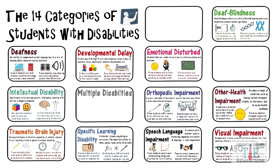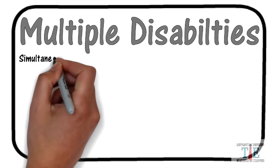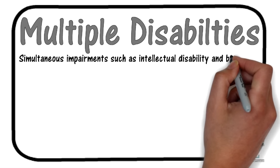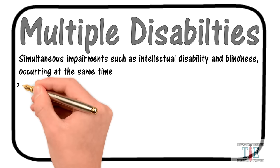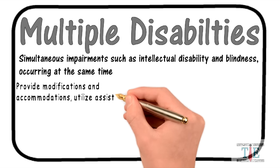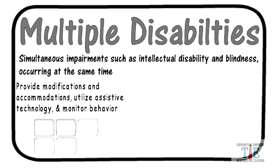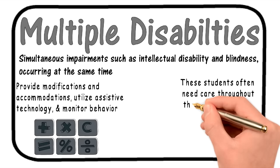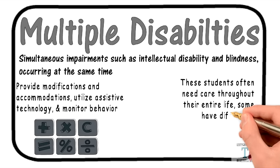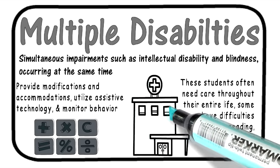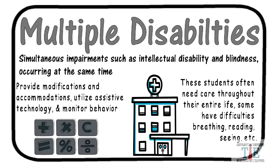Multiple disabilities. It is defined as simultaneous impairments such as intellectual disability and blindness occurring at the same time. Provide modifications and accommodations. Utilize assistive technology and monitor behavior. These students are going to need specific modifications and accommodations. Unfortunately, these students often need care throughout their entire life. Some have difficulties breathing, eating, seeing, etc. Many of these students receive their education at a hospital or residential school setting.